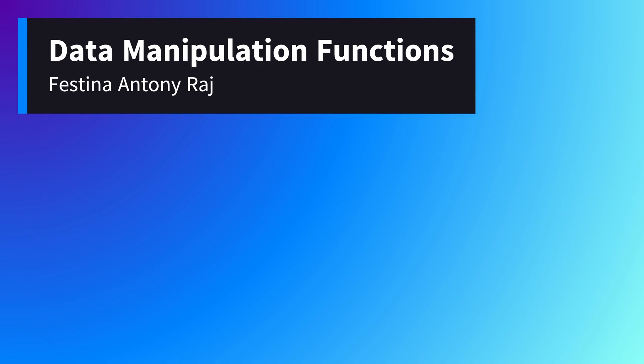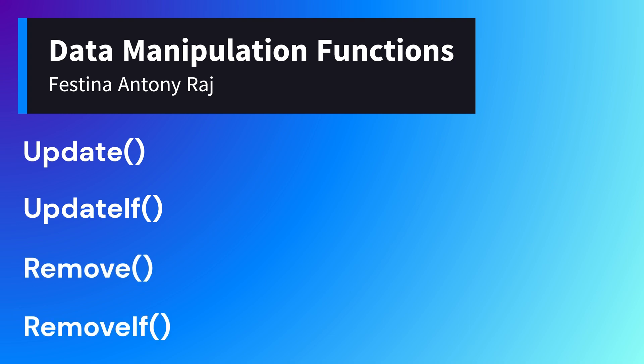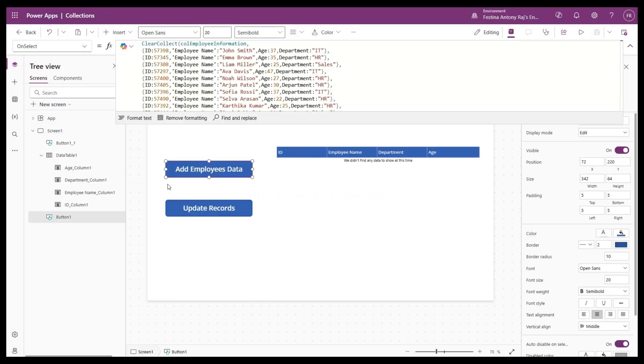Hello everyone, Festina here. In this video we're going to learn about four important functions in Power Apps which we can use for modifying and deleting records in our data sources. These four functions are Update, UpdateIf, Remove, and RemoveIf. These functions can be used on any data sources, but for our demo purpose we're going to be using them on a collection.